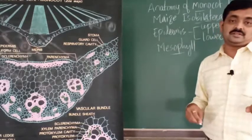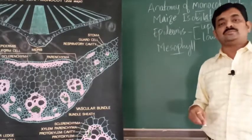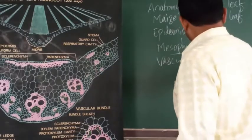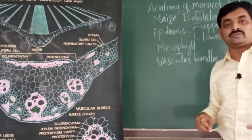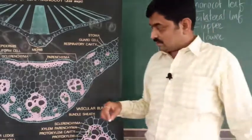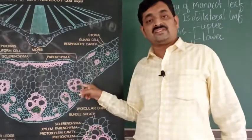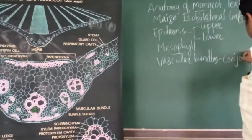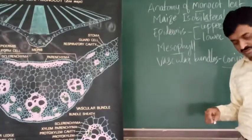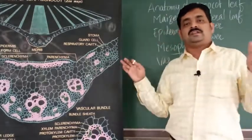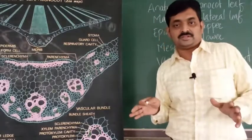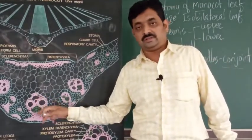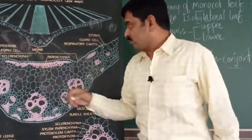In the veins of monocot leaf we can observe vascular bundles. Each vascular bundle is called conjoint because phloem and xylem are present in the same bundle and they lie in the same radius. Phloem is on the lower side and xylem is on the upper side.